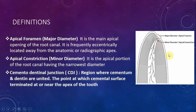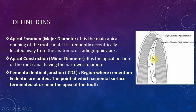The cemento-dentinal junction is the region where the cementum and dentine are united. The dentine in the root canal meets the cementum of the root apex, and the location where they both unite is called the cemento-dentinal junction.